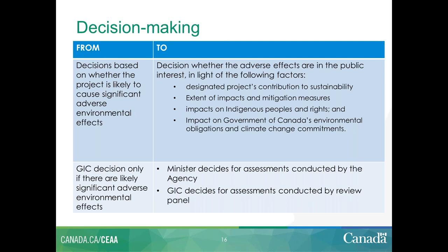Throughout the process, there are two types of assessments. For agency-led assessments, the Minister of Environment and Climate Change is the decision-maker on the public interest determination, with the ability to seek cabinet concurrence. For panel-led assessments — which could be joint panels with another jurisdiction, or panels done in cooperation with lifecycle regulators — decisions move to cabinet or Governor in Council. The rationale for either a ministerial or cabinet decision will be publicly posted and available.